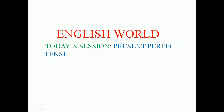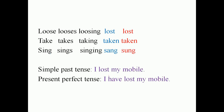This tense shows us that an action in the past has a result in the present — an effect in the present. Something that happened before now has an effect on something now. For example: in simple past tense, I could say 'I lost my mobile.' In present perfect tense, I could say 'I have lost my mobile.' Is there a difference between these two sentences?